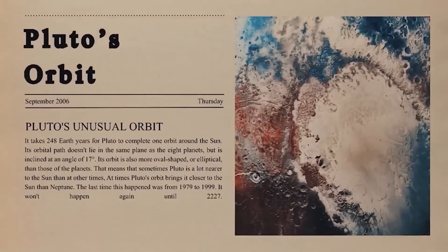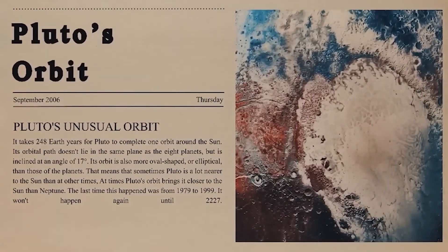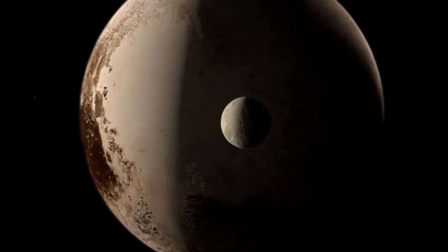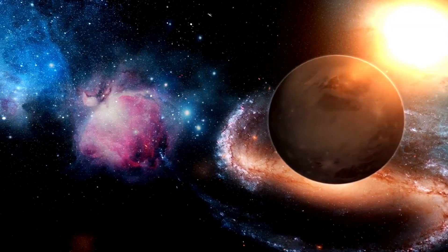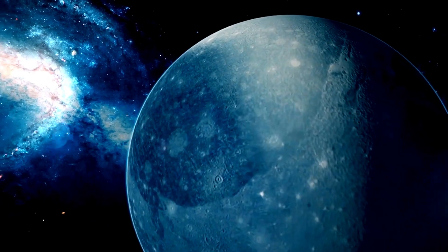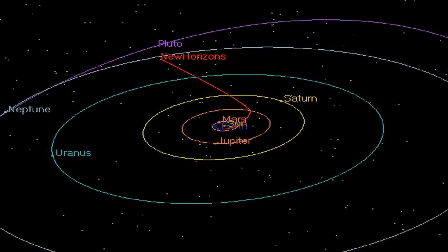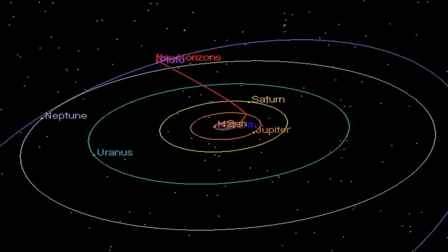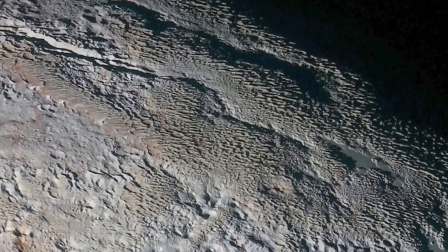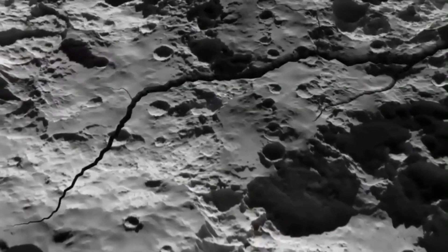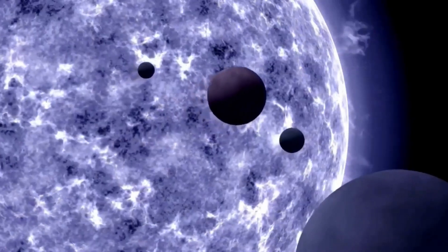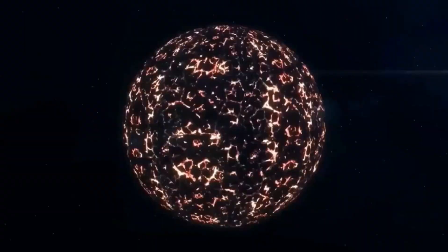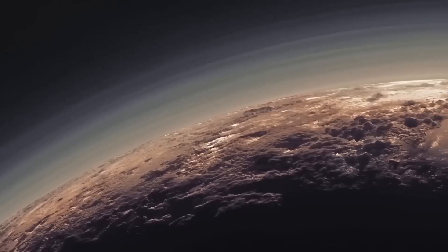Pluto's journey around the Sun stands out due to its unique characteristics within our solar system. Its orbit is exceptionally lengthy, spanning a staggering 248 years. Since its discovery in 1930, Pluto has yet to complete a full revolution around the Sun. Adding to its mystique is the highly elongated shape of its orbit, a departure from the more circular paths followed by the major planets. Furthermore, Pluto's orbit deviates by 17 degrees from the ecliptic plane, giving its path a steeper incline compared to other planets.